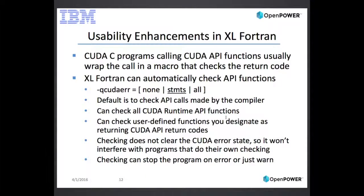XL Fortran has enhancements for usability. In CUDA-C, you typically write a macro around every API call to check the return — if it's not CUDA success, you call CUDA get error string and print an error. We have a compiler option that does this automatically for every API call. The default is to check only compiler-generated API calls such as kernel calls, assignments, and allocates. If you want, you can make it check everything, including user-defined functions — we have an attribute you can place on user-defined functions to tell the compiler to check the return for you.